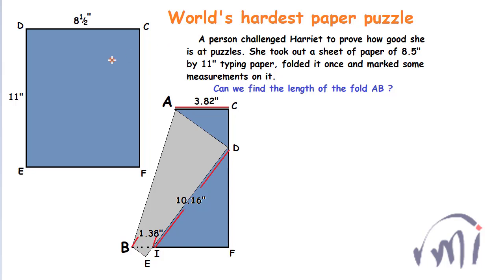So I have named the paper which is in the size of a rectangle, named the paper as CDEF and when we fold it like this, this point D will lie on the side CF and this E will be over here and then I have named this point as I and our purpose is to find the length of AB.